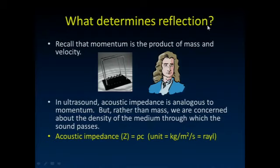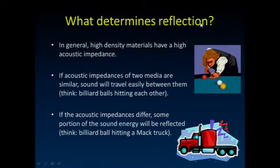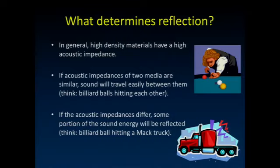What determines the amount of reflection? Acoustic impedance — analogous to momentum but using the density of the medium — is measured in units called rayls (kg/m²/s). High-density materials have high acoustic impedance. When two adjacent materials have very similar acoustic impedances, sound travels easily between them. When the impedances are very different, much more sound is reflected back to us. It's that difference in acoustic impedance between the two materials that governs the amount of reflection.